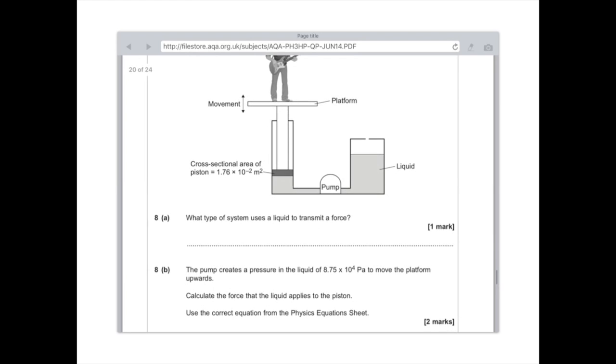The pump creates a pressure in the liquid of 8.75 times 10 to the 4 Pa to move the platform upwards. Calculate the force that the liquid applies to the piston and use the correct equation from the physics equation sheet. Okay, this question is actually more straightforward. I'm not going to write below because otherwise I'll lose the diagram. So, I'm going to write up here. So, AQA people, I know that you'll get your equation. But for everyone else, I'm going to do it like this.